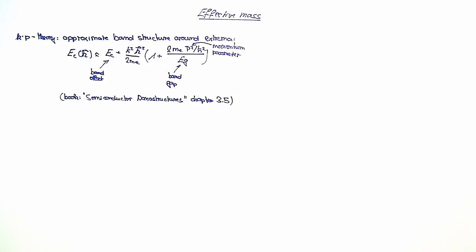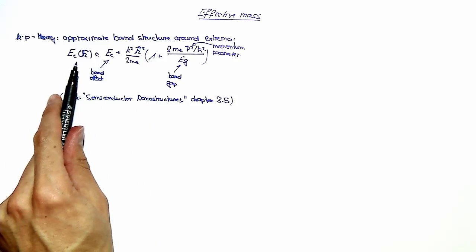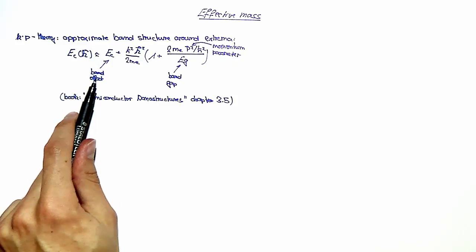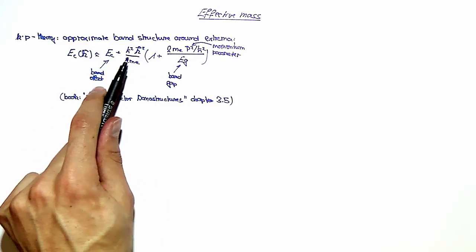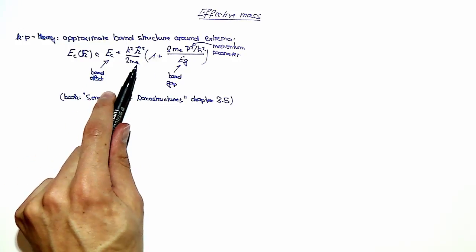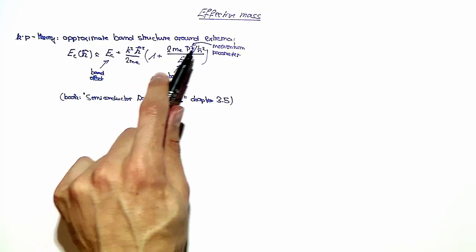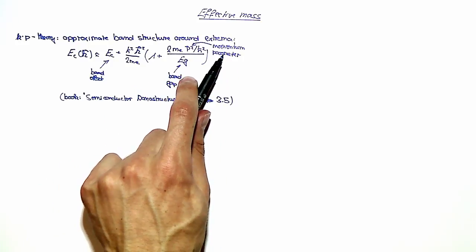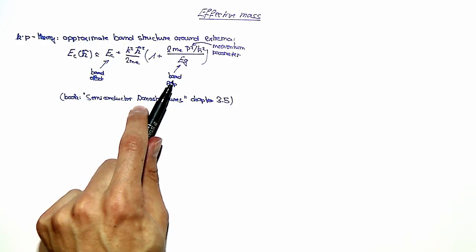So in our case, we are going to use it for the conductance band and one obtains an approximate expression for the conductance band dispersion, which depends on the band offset. Then there is a term for the free electron dispersion, where Me is the free electron mass, and also we have this factor here, where p is the momentum parameter and Eg is the band gap.